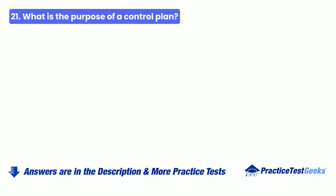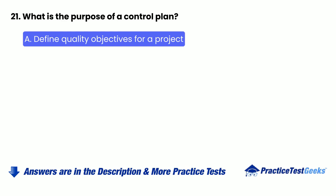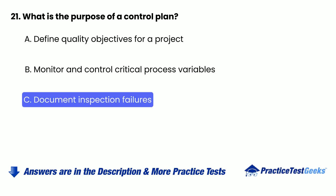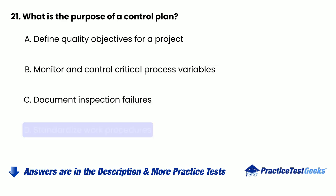21. What is the purpose of a control plan? a. Define quality objectives for a project. b. Monitor and control critical process variables. c. Document inspection failures. d. Standardize work procedures.